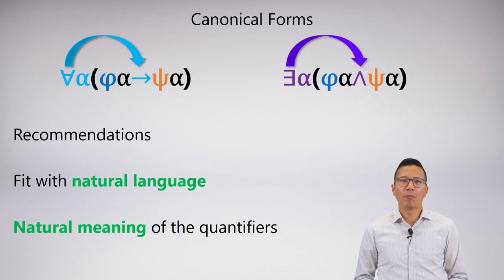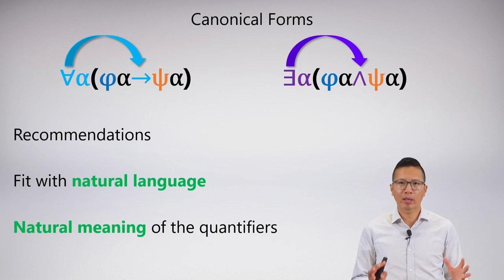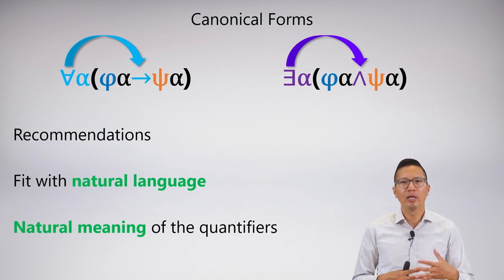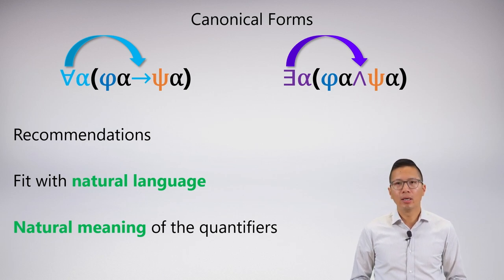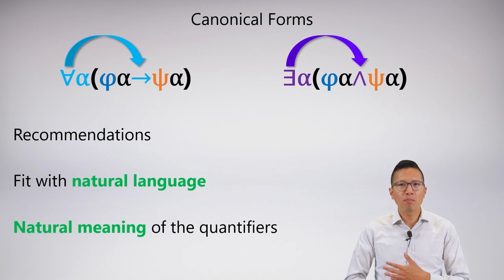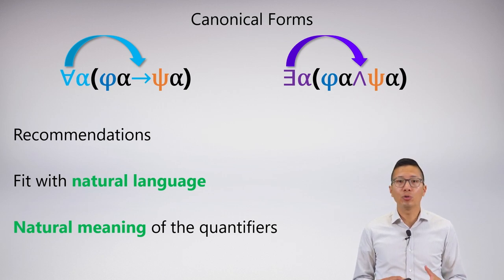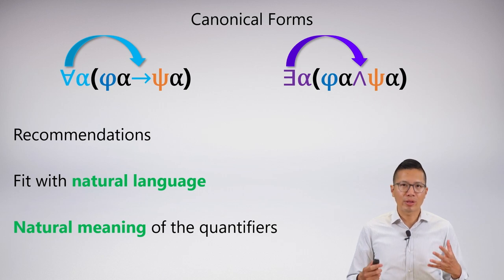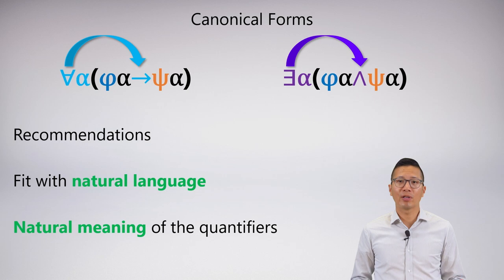So what are canonical forms? Really, they're not strict rules — these are recommendations on how to symbolize when you come across a universal or existential claim. The reason why these are the recommendations is because they fit really well with natural language and the natural meaning of our quantifiers and connectives. You don't have to symbolize it this way — from sentential logic you know there are many ways to create logically equivalent statements — but I would recommend sticking to this basic canonical form. It's clean and fits with meaning.